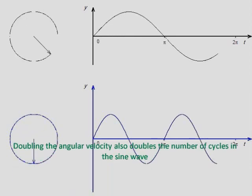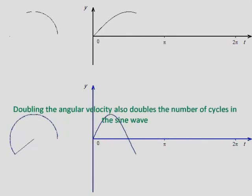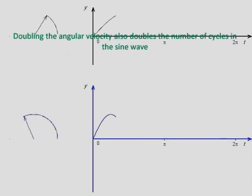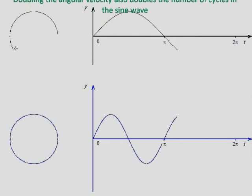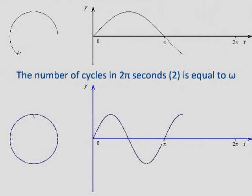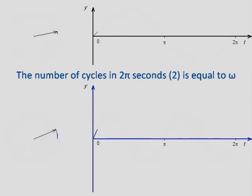We can see that this new phasor rotates at twice the speed of the original. For the same amount of time, the new phasor has completed 2 revolutions and the sine wave has gone through 2 cycles in the same time period. Hence, the number of cycles in 2 pi seconds is equal to the angular velocity.